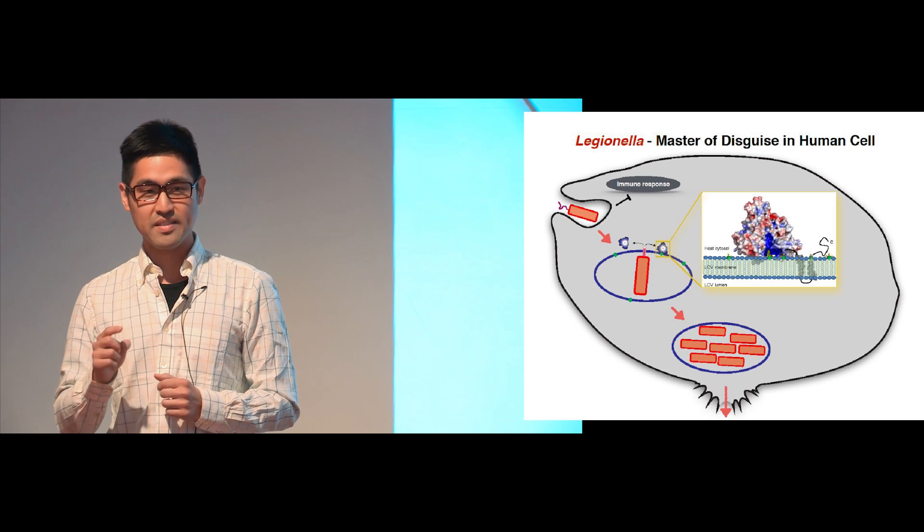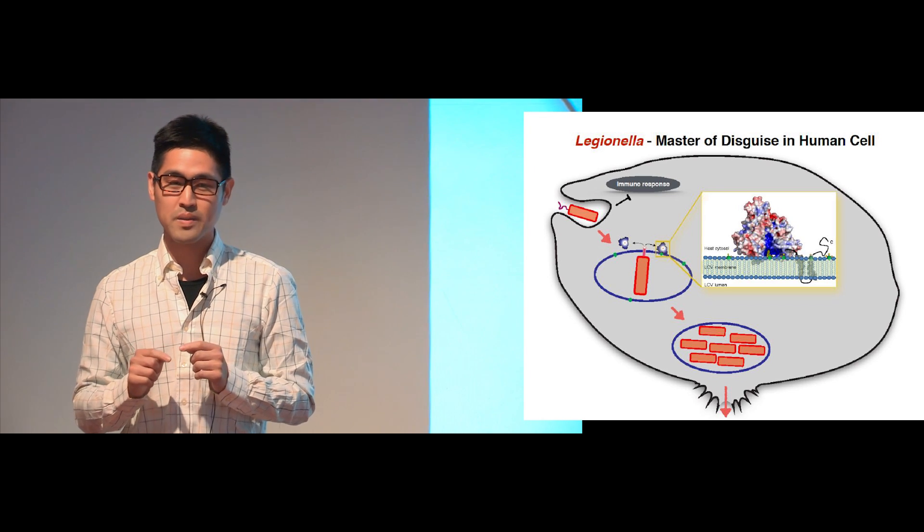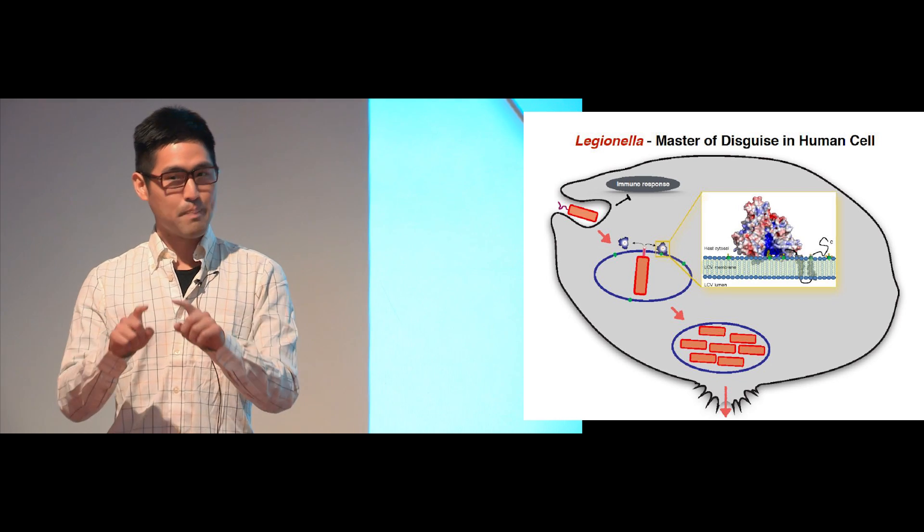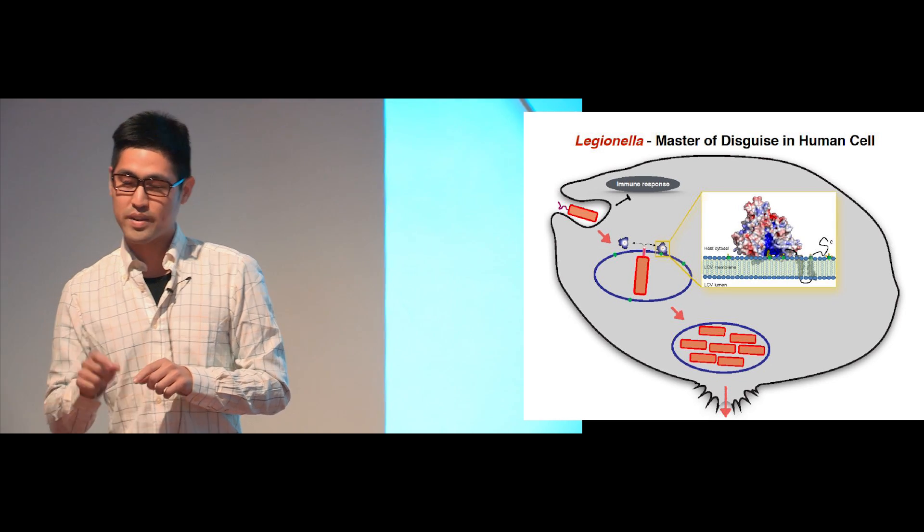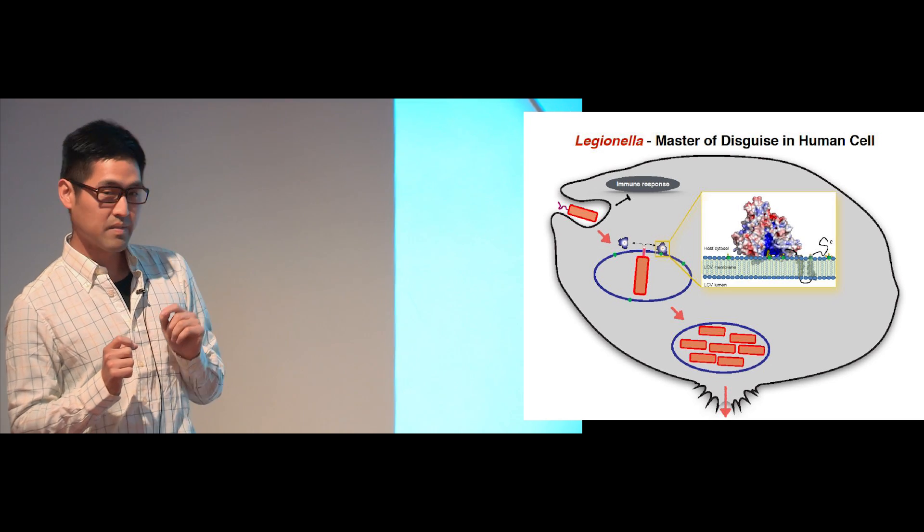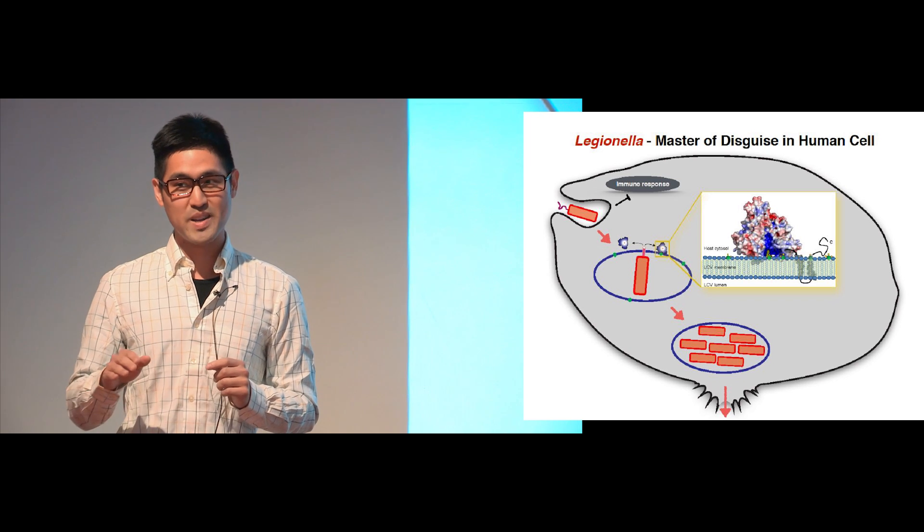And for my research, I discovered a protein secreted by this bacteria which enables it to camouflage in this vacuole. The human cell distinguishes between self versus non-self by decorating the membrane of this vacuole with a specific type of lipid, colored in green on the slide, which is a structural component of the membrane but also a signal for elimination.